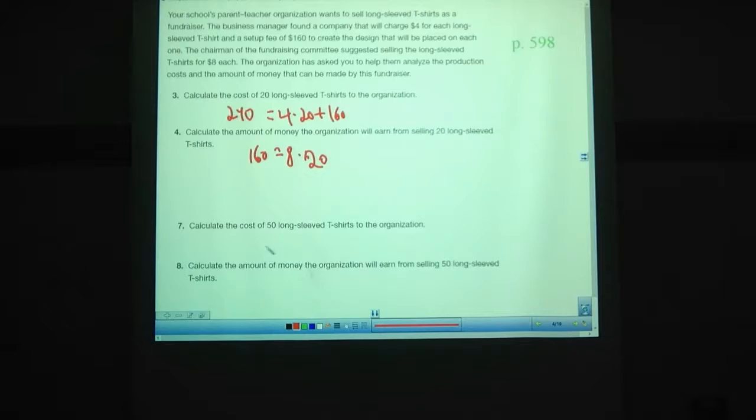So 7, calculate the cost for 50 shirts. If we make more shirts, maybe this works better. 4 times 50 this time plus $160. 4 times 50, that is $200 plus the $160, $360. And the amount of money we'll earn from selling those, $8 per shirt times 50 shirts, that's $400. Hey, we made money this time. $40.